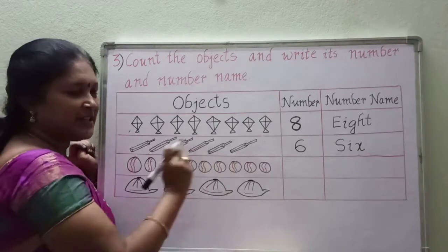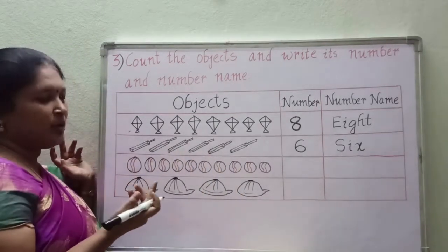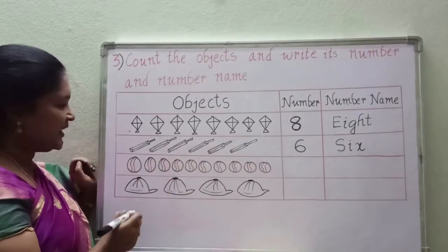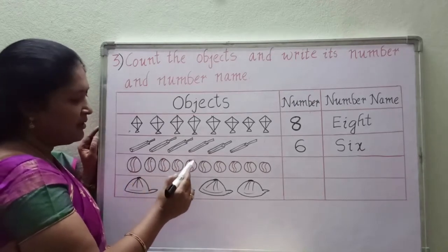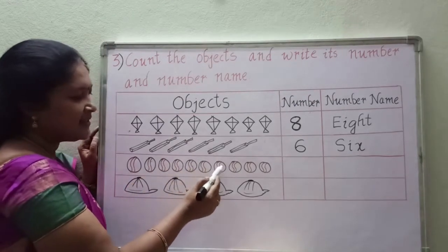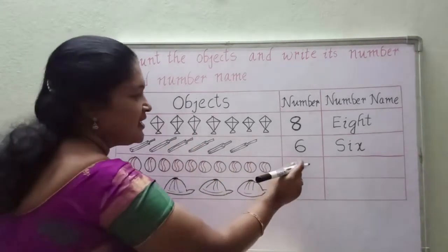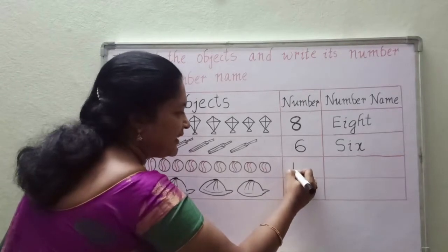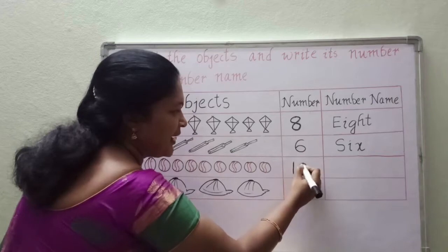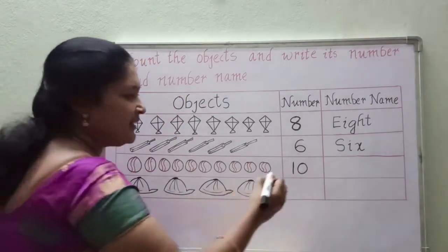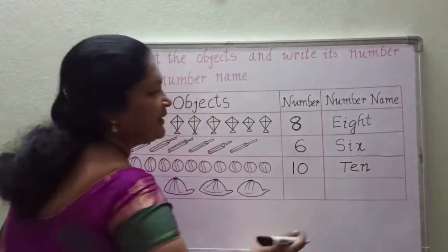And next picture — how many balls are there? You like to play with the balls very much. Let us count: 1, 2, 3, 4, 5, 6, 7, 8, 9, 10. 10 balls are there. So here you should write 10 number. And what is the spelling of 10 children? T-E-N.